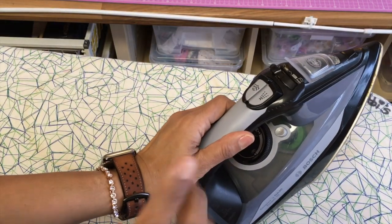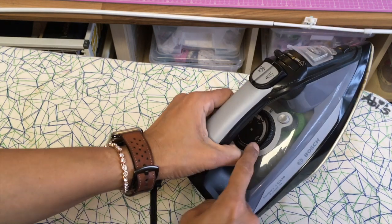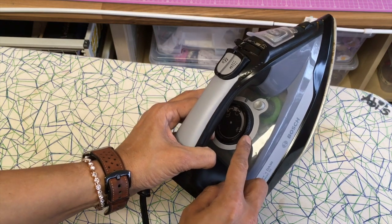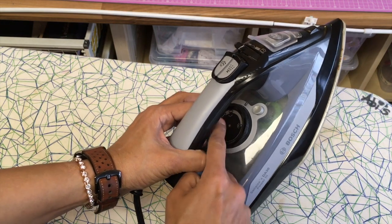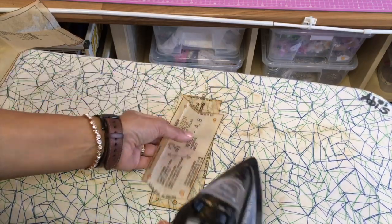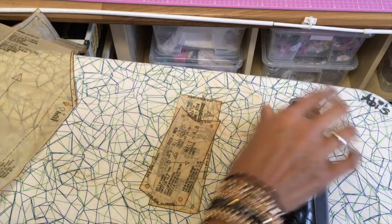Now I'm going to use a dry iron, that means I've not got the steam activated, and I'm going to put the button marking on. Here we go.